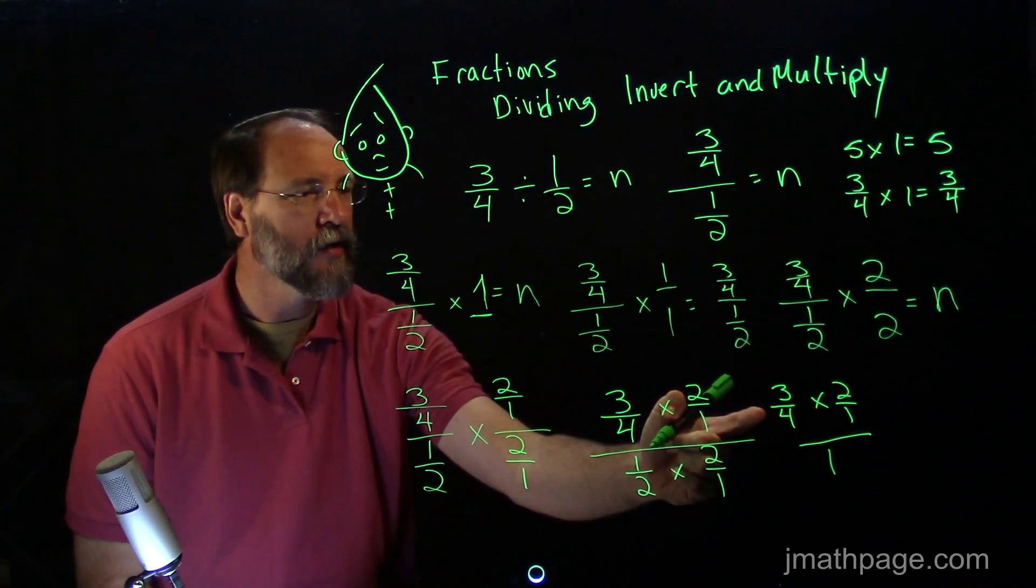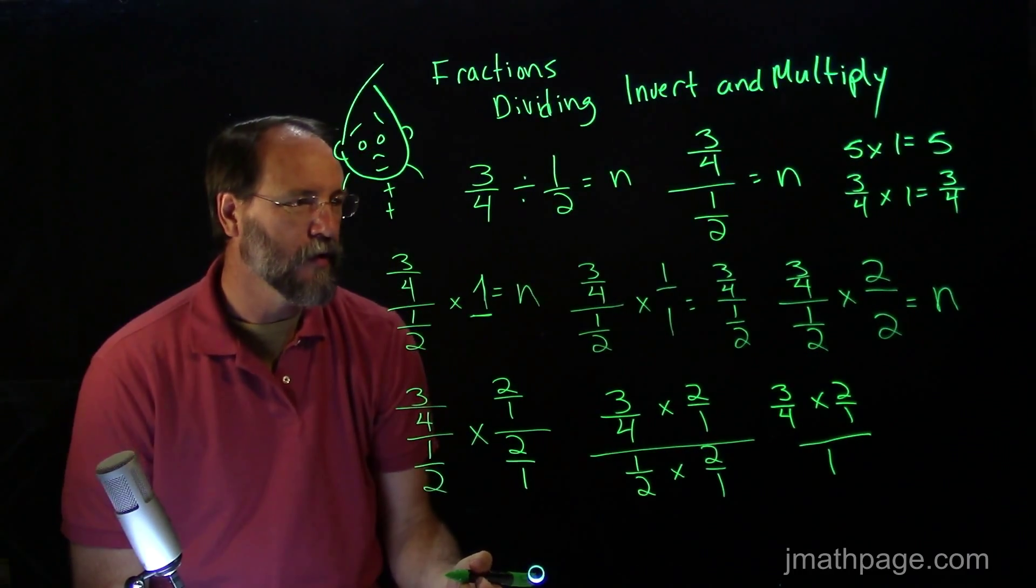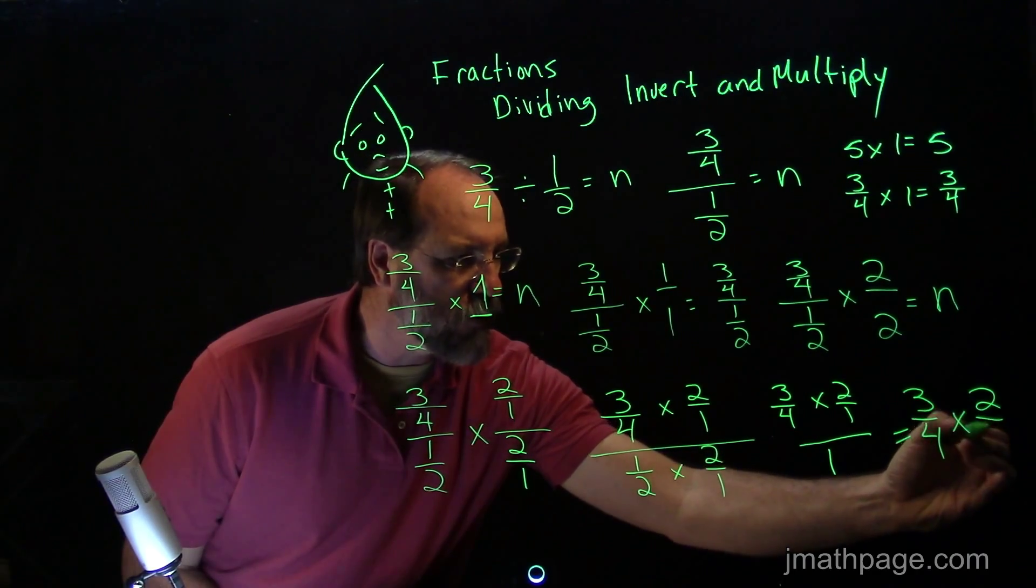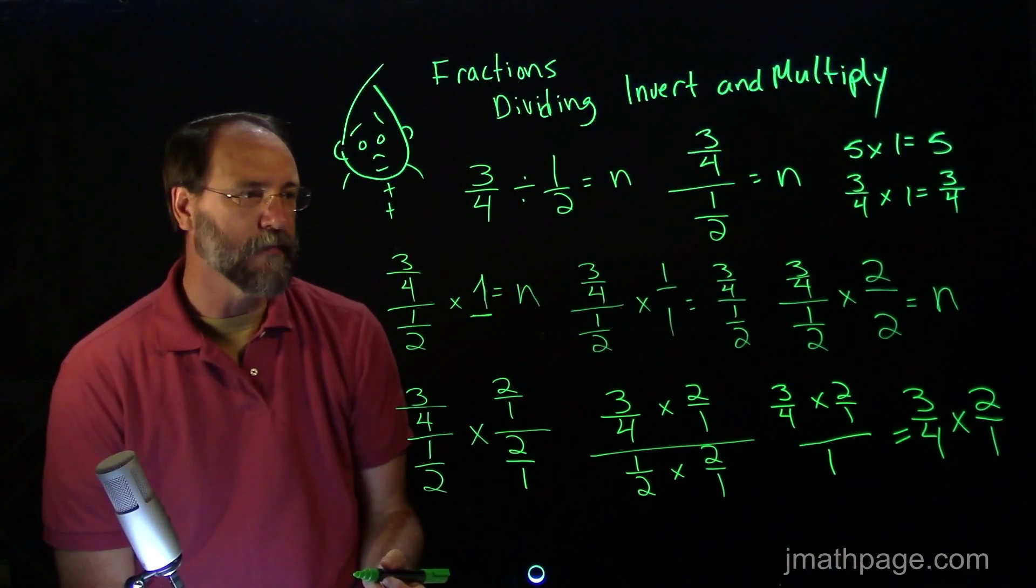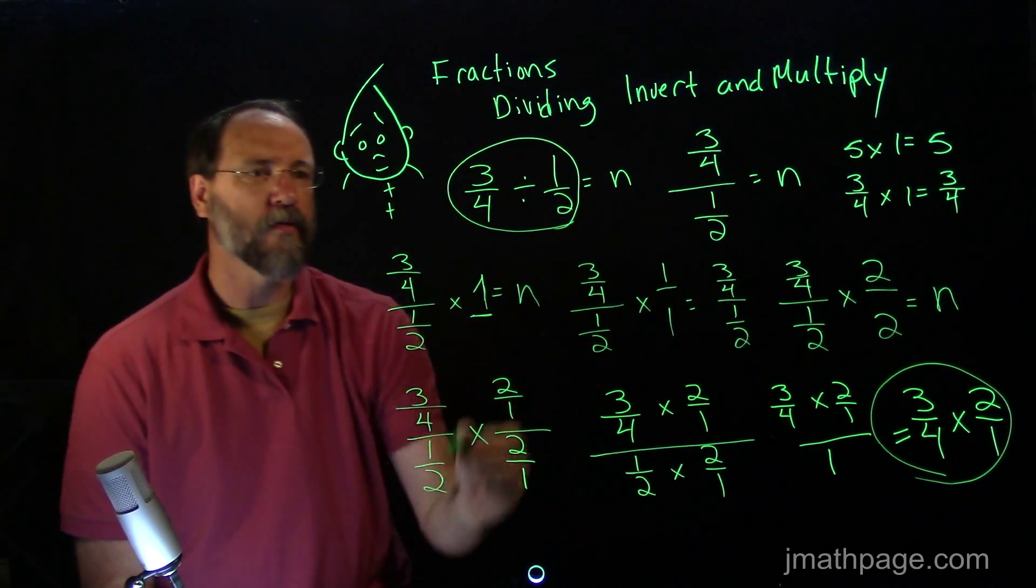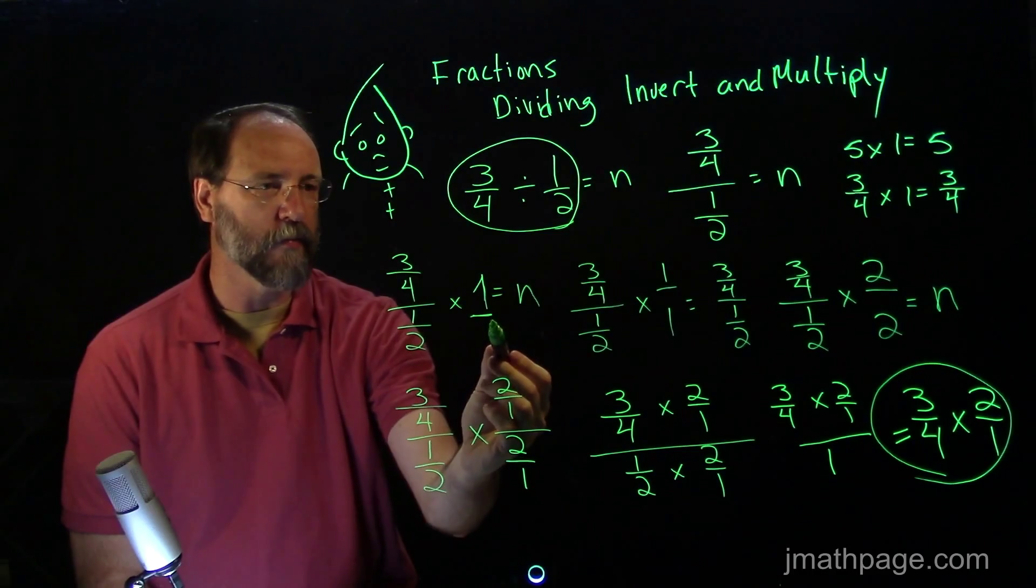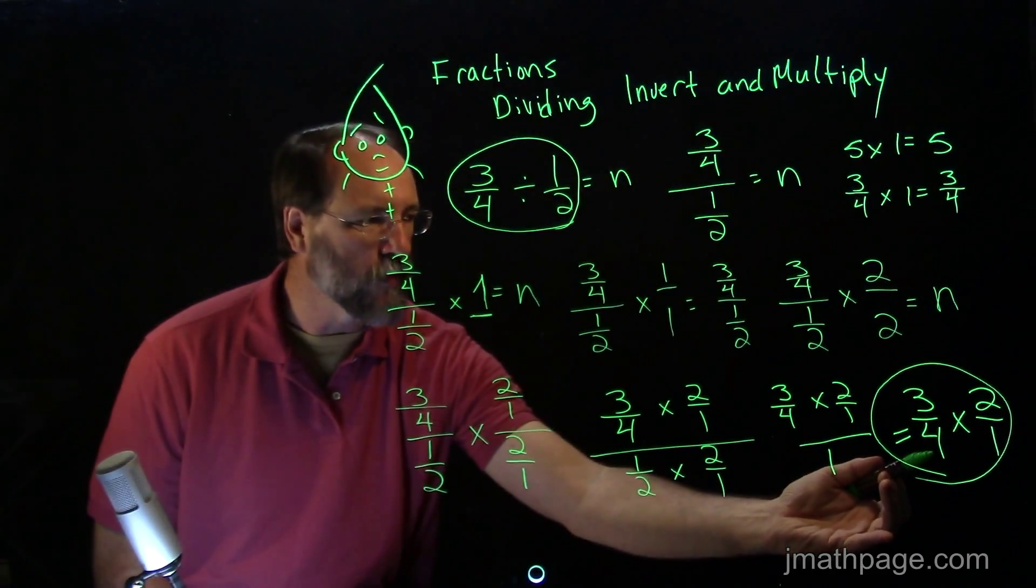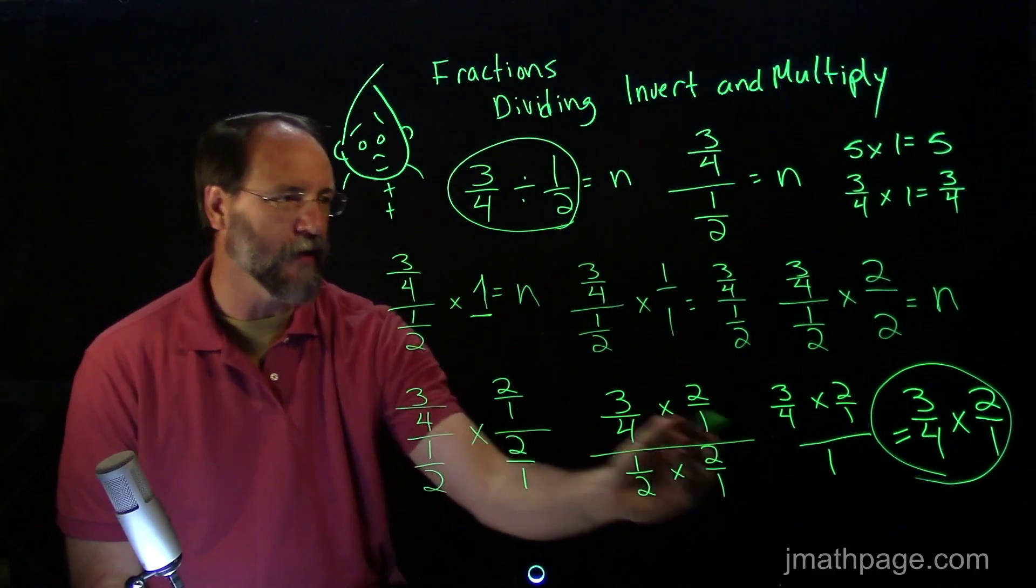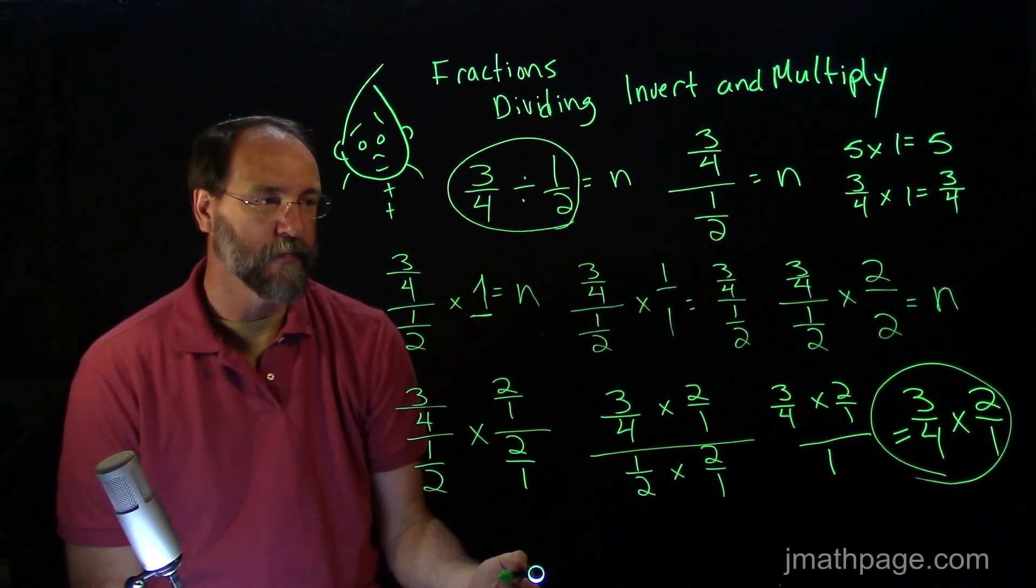We like that. We know that any fraction that has a denominator of 1 is going to be the sum or the total of whatever the numerator is. So let's look at that. We know that this is equal to 3 fourths times 2 over 1. Here comes the big part. This is what we started with. This is what we have now. We've changed 3 fourths divided by 1 half by using some properties of fractions and whole numbers and the identity principle to come up with 3 fourths times 2 over 1. So this dividing 1 half, inverting the 1 half and multiplying it becomes 2 over 1 times 3 fourths. So that's where invert and multiply comes from.